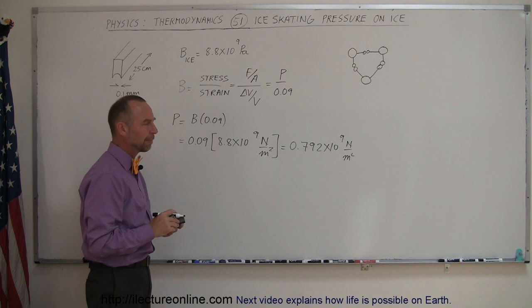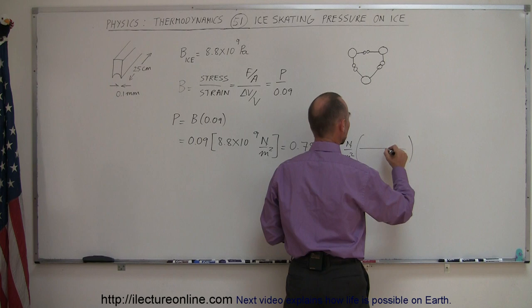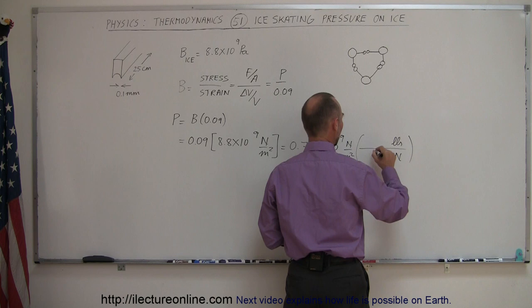Now let's convert that to pounds per square inch because most of us are a little bit more familiar with those units. So we have to convert that from Newtons to pounds. It's roughly—we need pounds at the top, Newtons in the bottom, and one pound is 4.48 Newtons approximately.